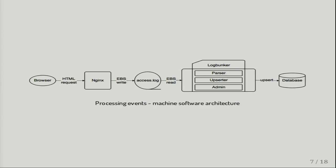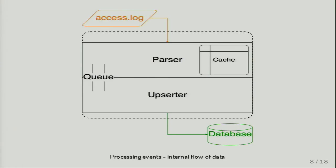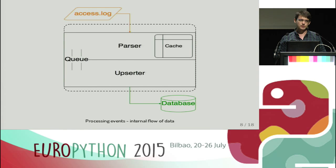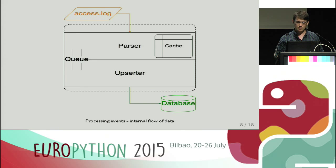Inside the LogBunker service there are three processes working at the same time. Two of these are the parser and the absorber. The parser reads the access log continuously — just like a Unix tail — analyzes events, and caches them into an internal cache structure using Python standard types. After caching data for a fixed, configurable period of seconds, it pushes that data into a multiprocessing queue that connects to the absorber. The absorber then pops the queue and pushes the data into the database.